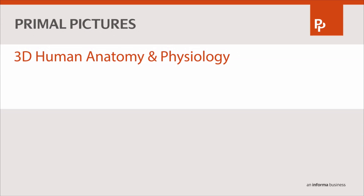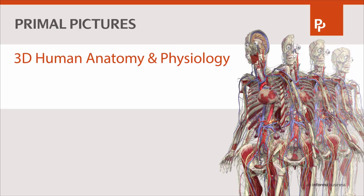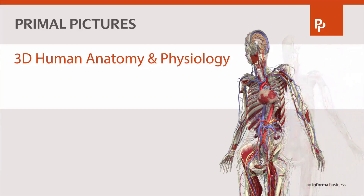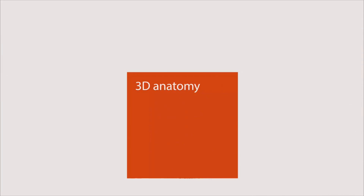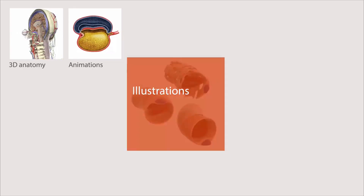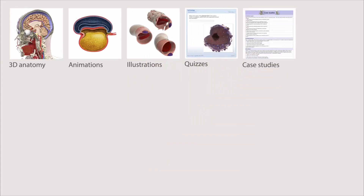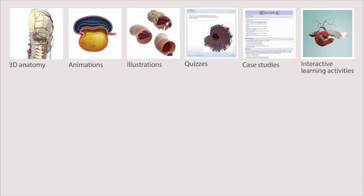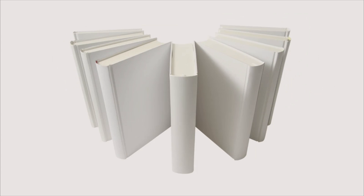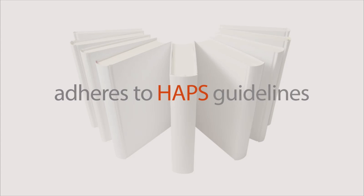Primal's 3D Human Anatomy & Physiology is a unique and innovative digital resource for both teaching and learning. Designed to meet the challenges of anatomy and physiology education today with high quality interactive content presented in an engaging environment. Anatomy & Physiology content is equivalent to the major anatomy and physiology textbooks and adheres to Human Anatomy & Physiology Society guidelines.